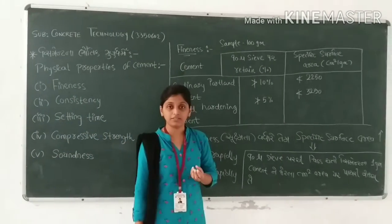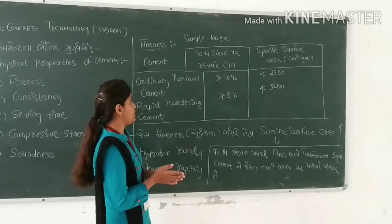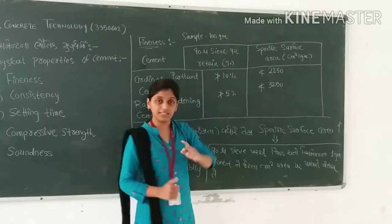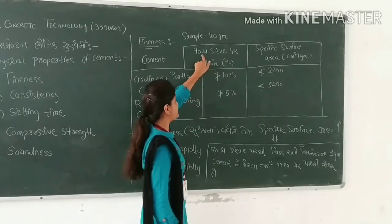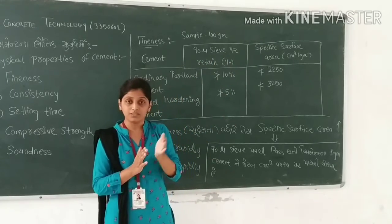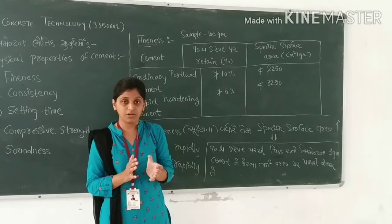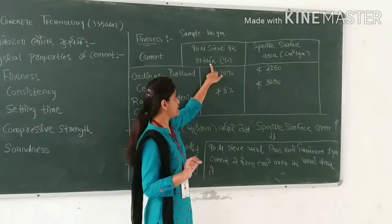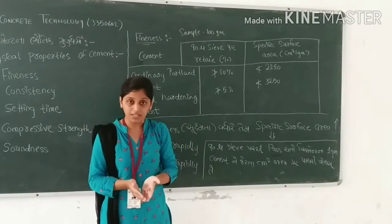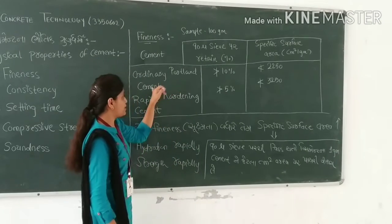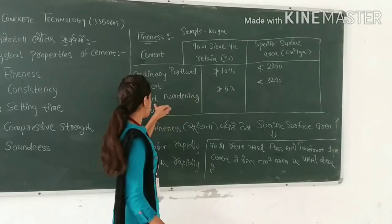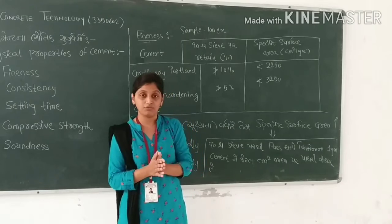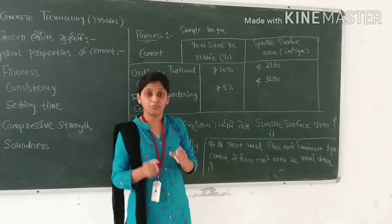Fineness — it is called cement ni sukshmata, meaning the fineness of cement particles. A 100 gram sample is sieved through a 90 microns English standard sieve for up to 10 minutes. The material retained on the 90 micron sieve is measured.